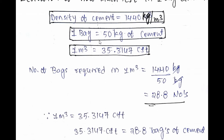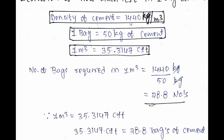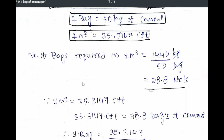Now let us derive how many bags of cement are required in one meter cube of volume. Number of bags required in one meter cube of volume equals 1440 divided by 50. From where does 1440 come? Density of cement equals 1440 kg per meter cube, which means one meter cube contains 1440 kg. And since one bag of cement equals 50 kg, if we divide, we get 28.8 bags. So one meter cube of volume contains 28.8 bags, which means 35.3147 cubic feet should contain 28.8 bags of cement.